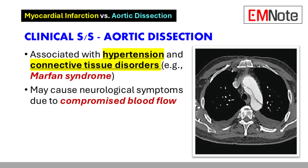Aortic dissection is strongly associated with hypertension and connective tissue disorders, such as Marfan syndrome. Neurological symptoms may occur due to compromised blood flow to the brain. Limb ischemia is another possible complication. These clinical features highlight the systemic impact of aortic dissection.